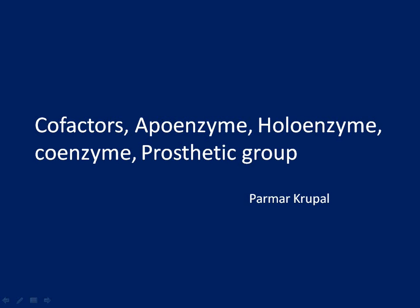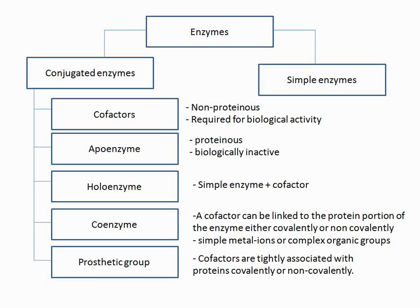Hi friends, welcome to Cruise Biology. Today we are talking about cofactors, apoenzyme, holoenzyme, coenzyme, and prosthetic group. Enzymes are simply divided into two types: the first one is simple enzymes, and the second one is conjugate enzymes. Simple enzymes consist of only an amino acid sequence.